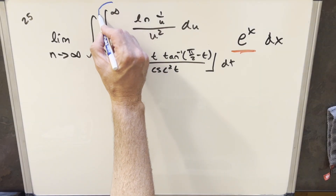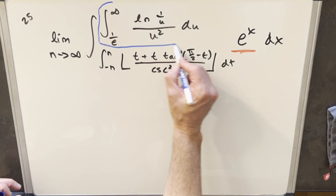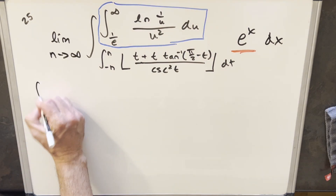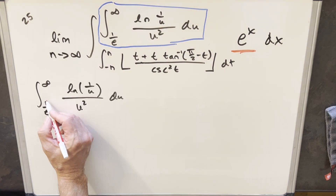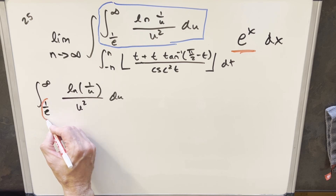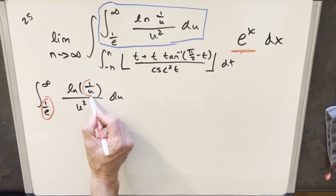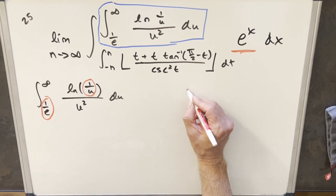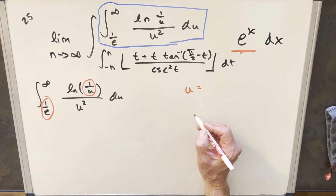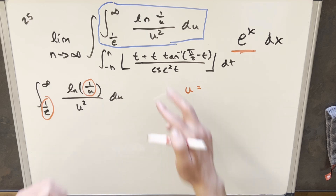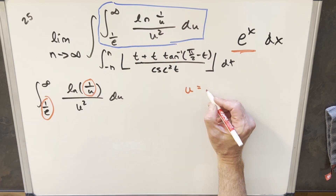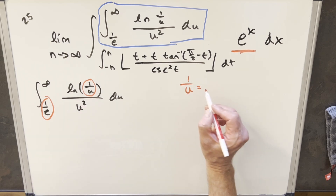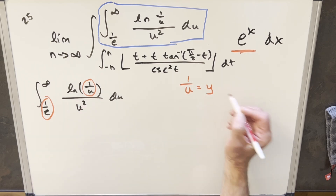Now that we've got our bounds set on this one, let's move on and do the next integral. Noticing that we have a reciprocal of e and a u², this is a good case for a substitution. We've already used most of our variables up here, so let's use y. For this one, let me substitute 1/u = y, so y = 1/u.